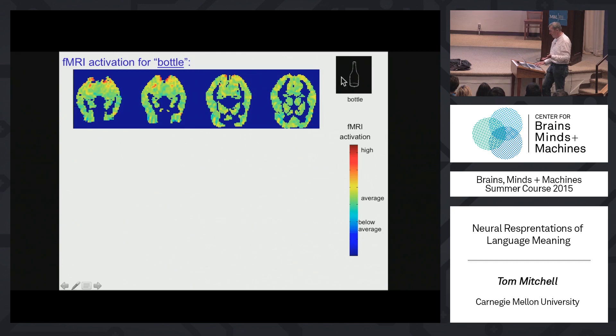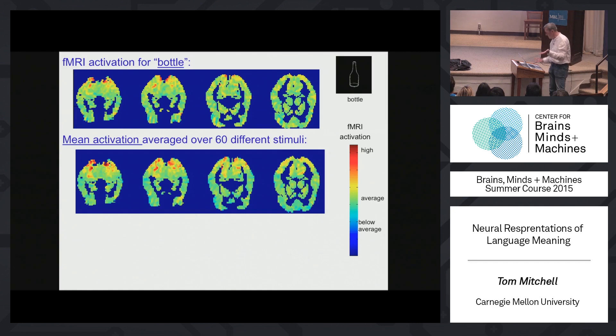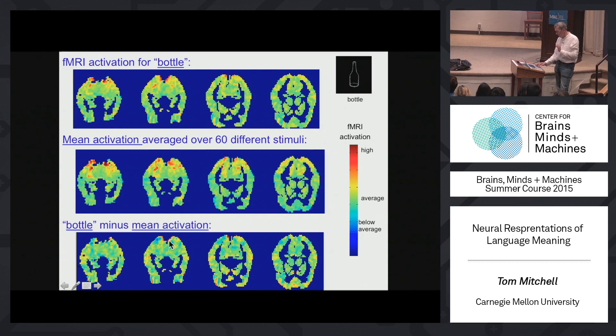You might ask what it looks like if they think about something else. If we average over 60 different words, here's the brain activity — and you can see it looks a lot like 'bottle,' but maybe there are some differences. If I subtract out this mean activity from the brain image we get for 'bottle,' you can see the residue — there are in fact some differences in the activity we see for 'bottle' compared to the mean activity over many words. That's the kind of data that we have if we use fMRI to capture brain activity while people read words.